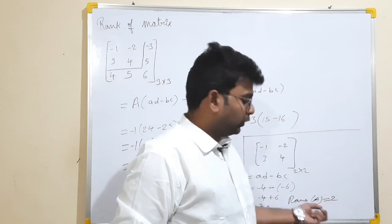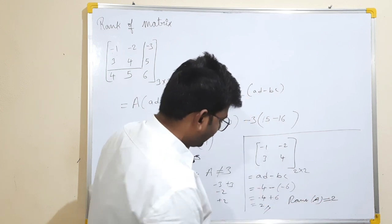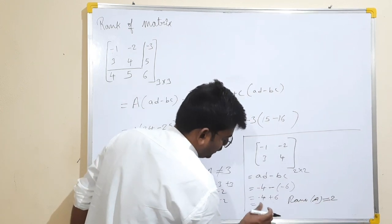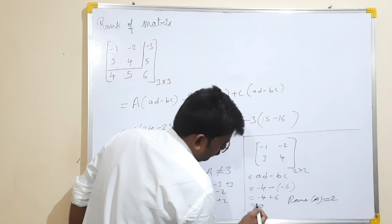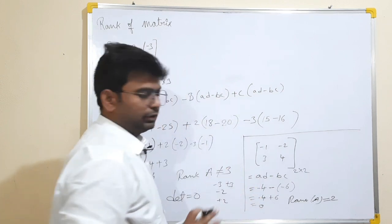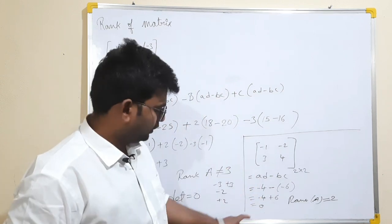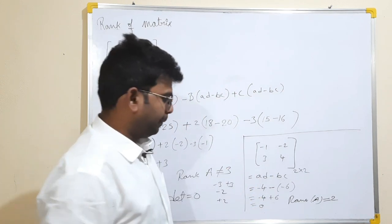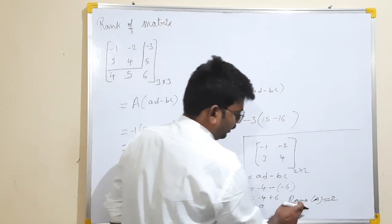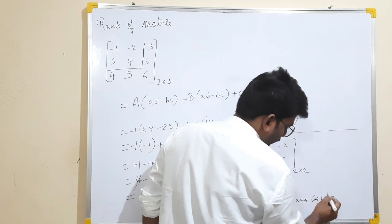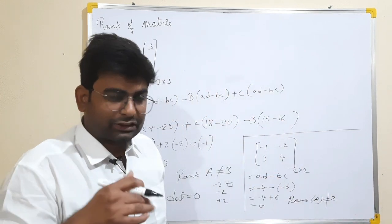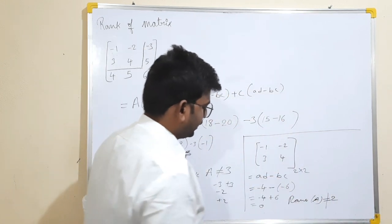So here, A is 0. The rank of A is not equal to 2. The rank of A is not equal to 2. Next, further gain.